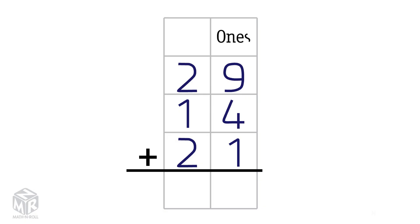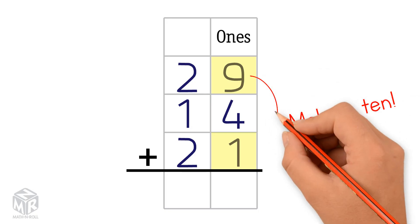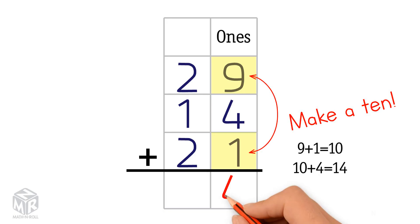First we add the ones. We can make a 10 using 9 and 1. 9 plus 1 equals 10. Then we add the other ones digit. 10 plus 4 equals 14. We put the 4 in the ones column and the 1 in the tens column.